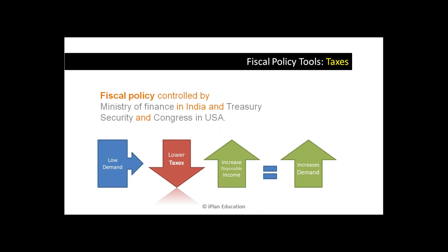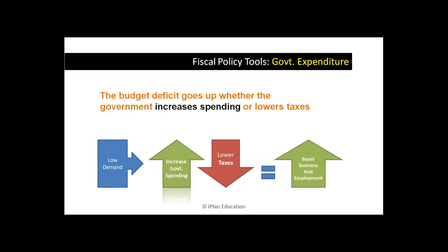Fiscal policy is normally controlled by the Ministry of Finance in India, and by Treasury, the Secretary, and Congress in the United States. If there is low demand, you lower the taxes — that increases disposable income and leads to increased demand. Or you increase government expenditure. You can do both, which will lead to business increase, employment, jobs, and GDP increase.